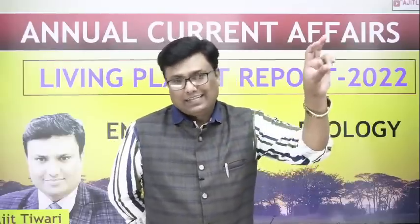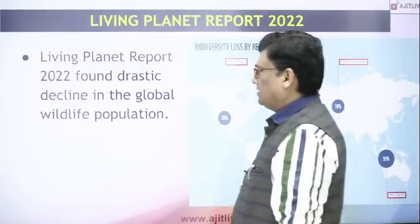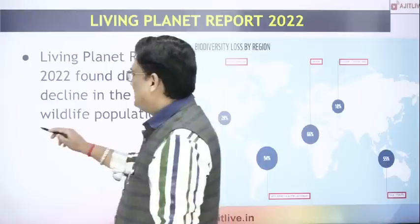The regions are: tropics, which are rich in biodiversity; the temperate or moderate zone; and the polar zone — these are the areas where wildlife population decline is at an extremely alarming rate. The LPR Living Planet Report 2022 found a drastic decline in global wildlife population.